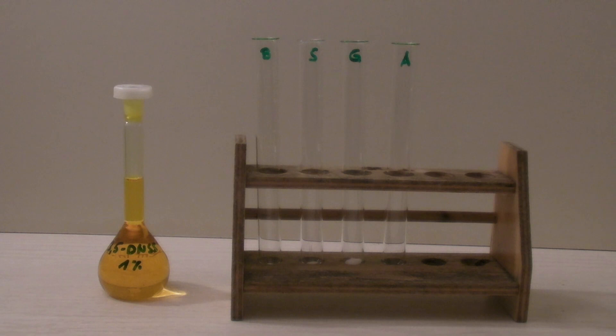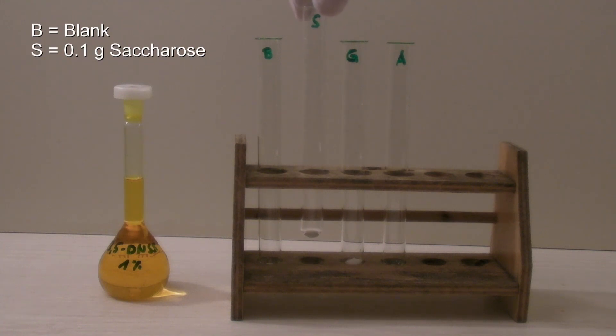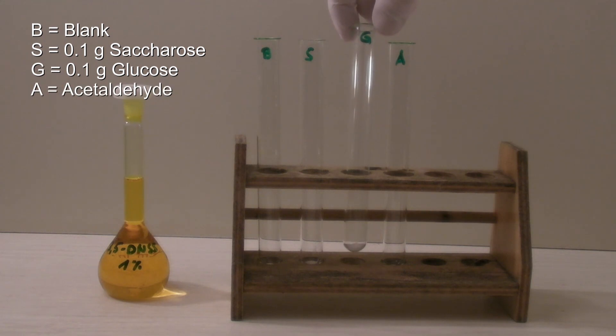Next, four test tubes have been prepared. The first one was a blank and contained nothing. The second one contained 0.1 grams of saccharose. The third one contained 0.1 grams of glucose. And to the last one, a solution of acetaldehyde will be added.